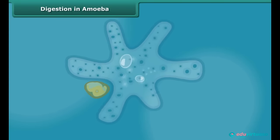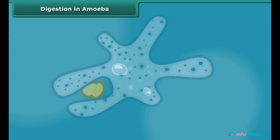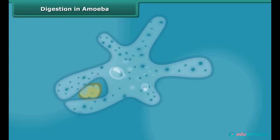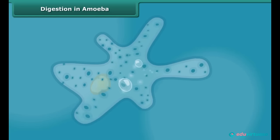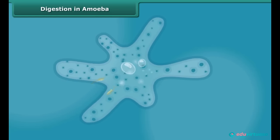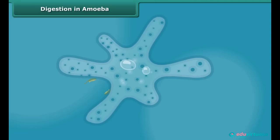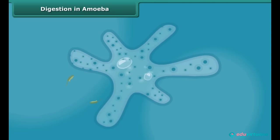Amoeba changes its shape constantly by pushing out finger-like projections called pseudopodia, or false feet, and captures microscopic organisms as food. The food becomes trapped in a food vacuole, and digestive juices act on the food to break it down into simpler substances. The undigested food is then expelled outside by the vacuole. All animals share the same basic process of digestion.